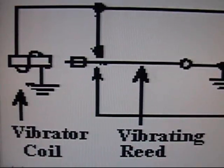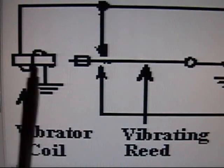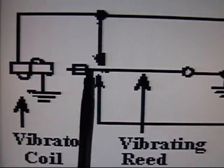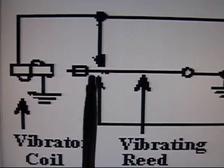This is your basic vibrator circuit. Here is the vibrator coil. Here are the contacts, and this is the reed.